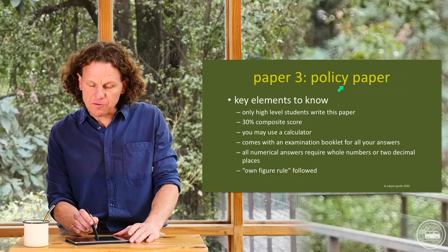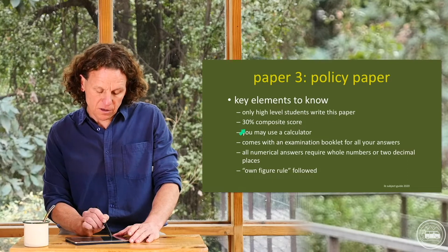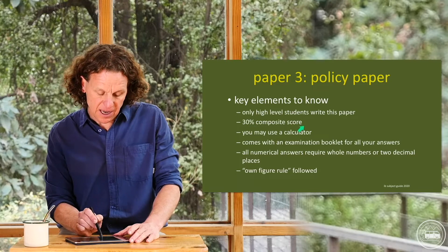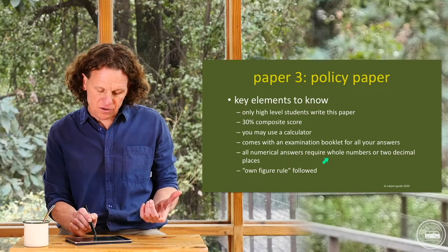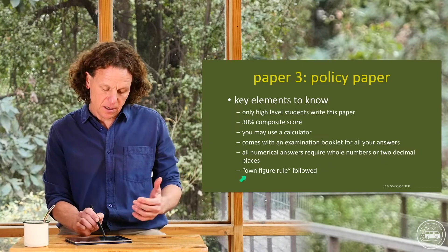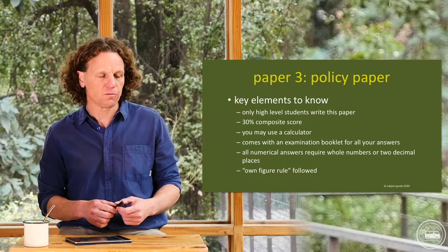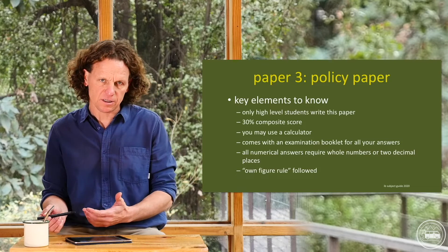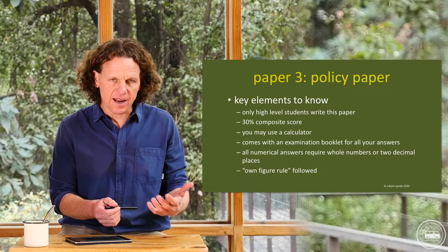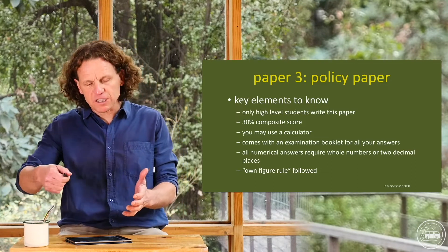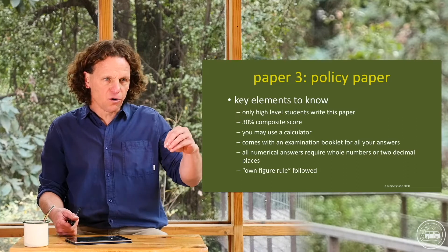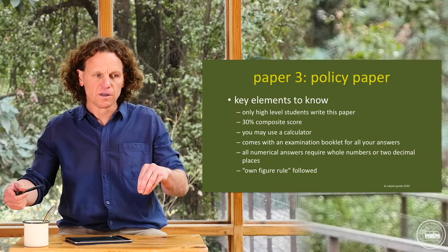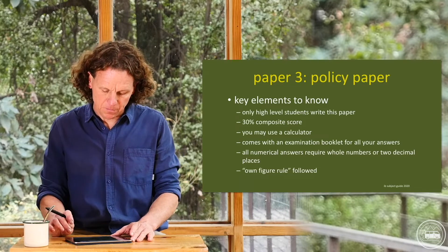It's such a compliment, really, that the IB is asking you to do these things. So, what are the elements of Paper 3, the policy paper? Of course, this is only for high-level students. This makes up 30% of your composite IB score. You may use a calculator. It comes with an examination booklet for all your answers, so it actually looks physically different than the other papers. All numerical answers require whole numbers, or only up to two decimal places, and the own figure rule is followed. What that means — it used to be called error carried forward — is that if you make a simple computation error in part A but you carry forward that error, all of your explanations are good, you'll lose points for the calculations but you won't lose points for any calculations based on that original flaw. Your mistake, if it's carried forward, will only count against you once, not multiple times throughout the paper.